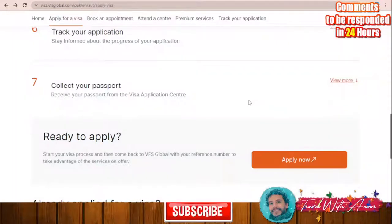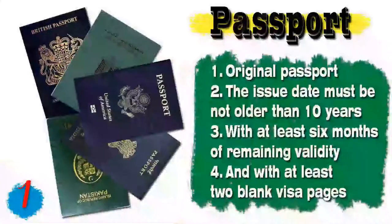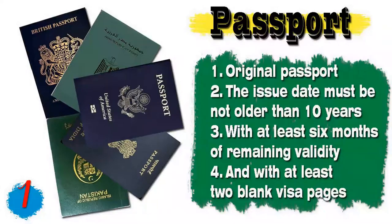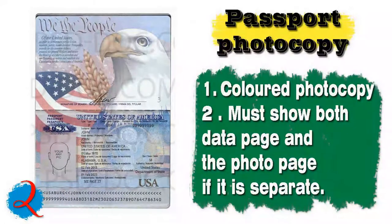The first document is your passport. The passport must be original, the issue date must not be older than 10 years, with at least six months of remaining validity, and at least two blank visa pages for stamps. You will also need a colored photocopy of your passport showing both the data page and the photo page.